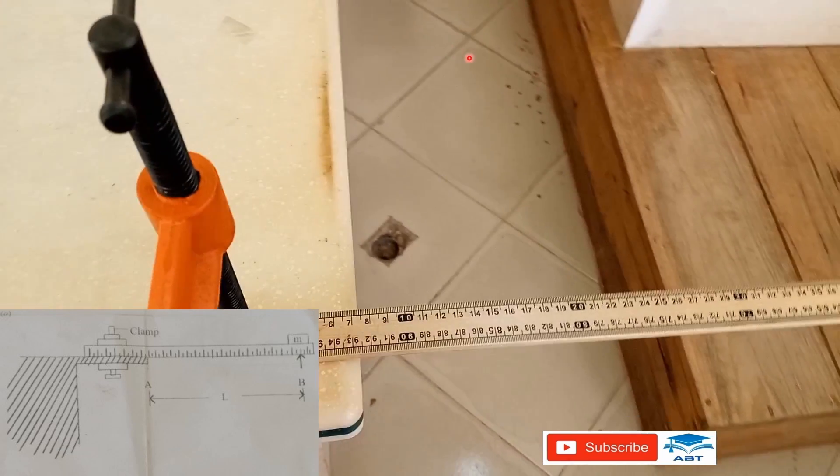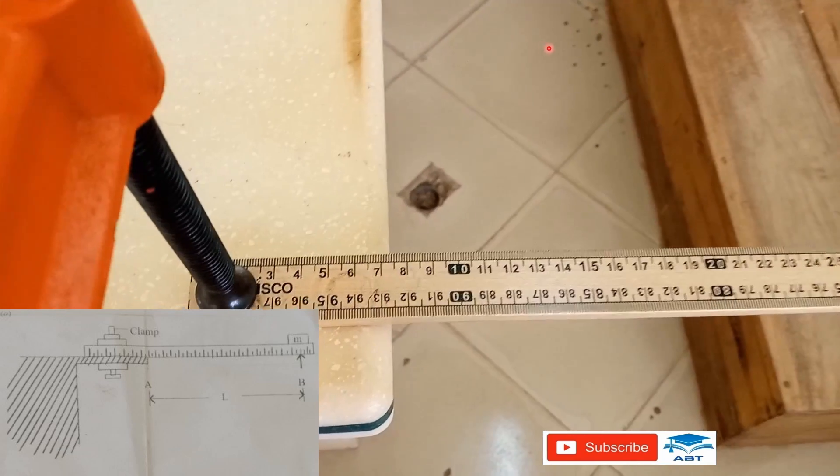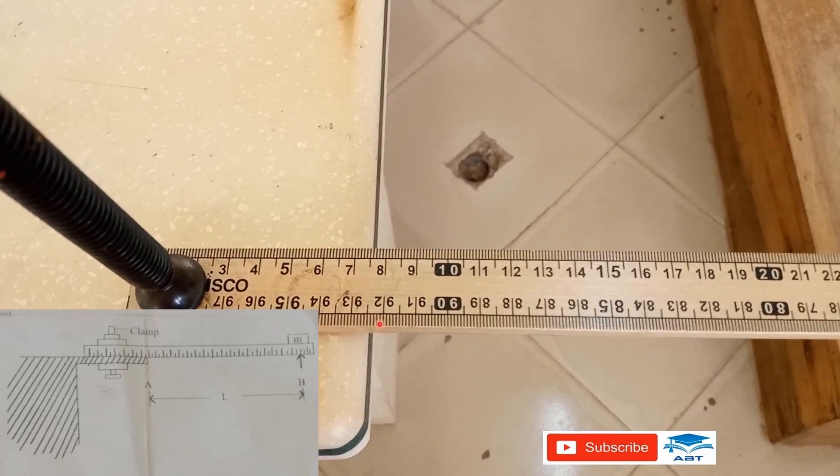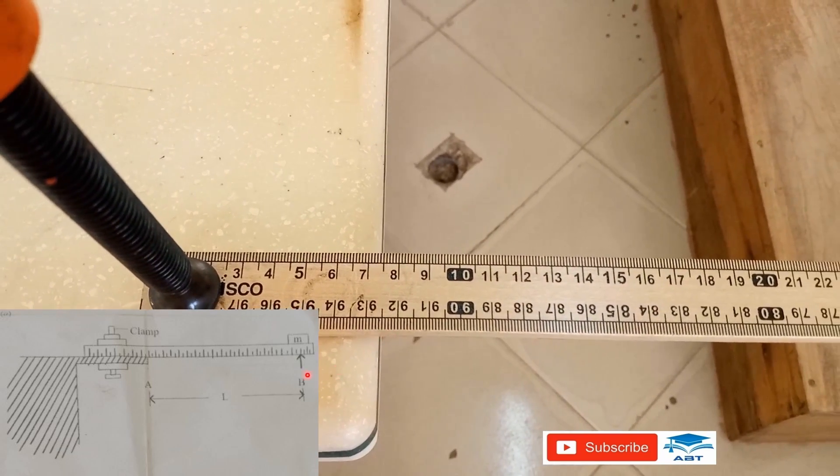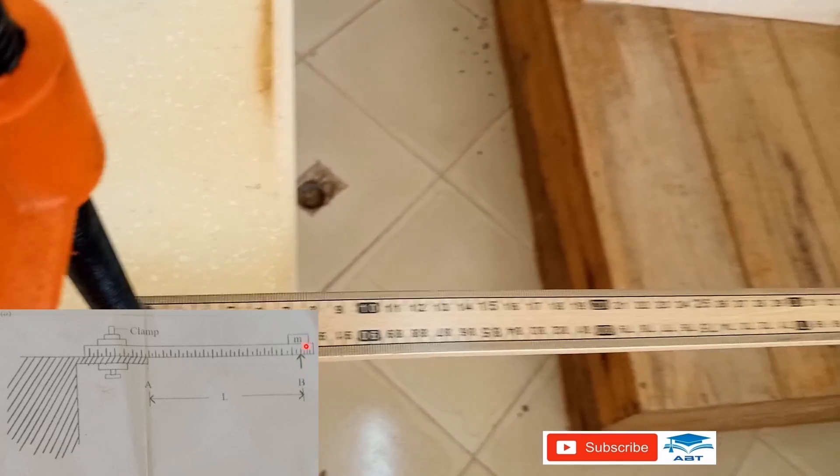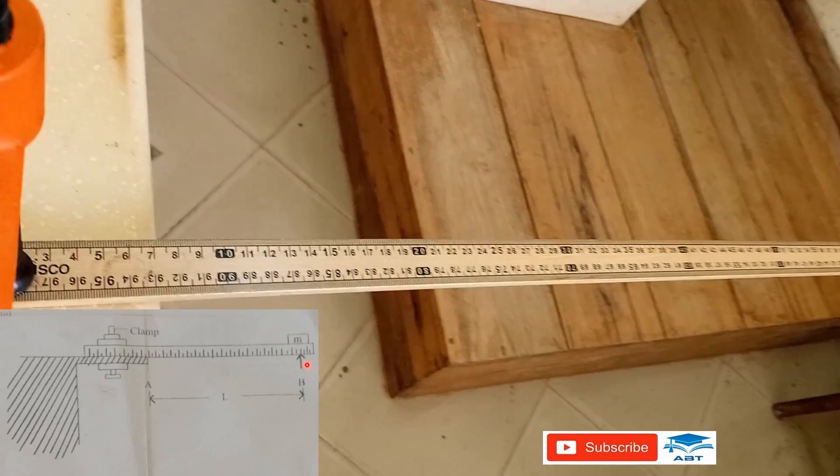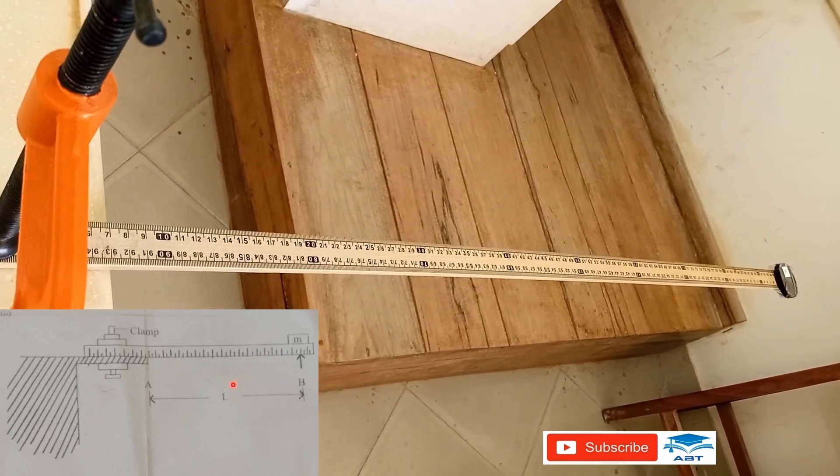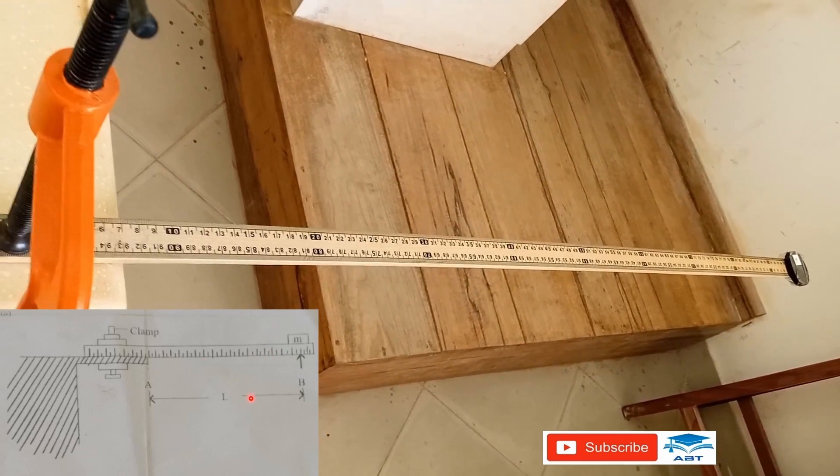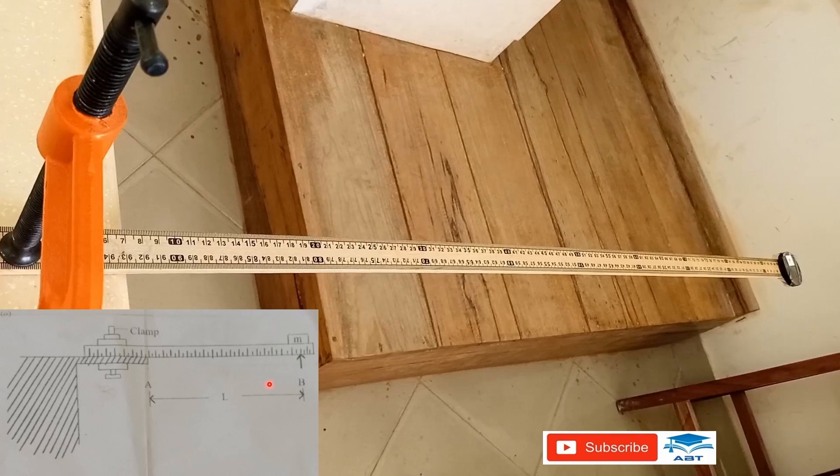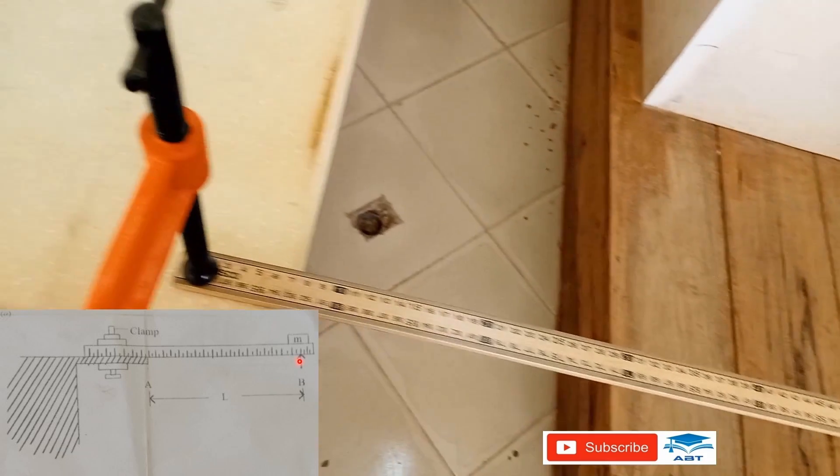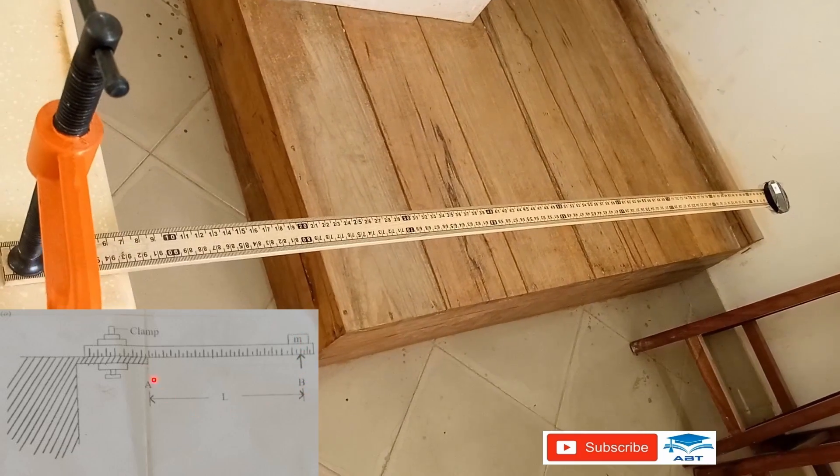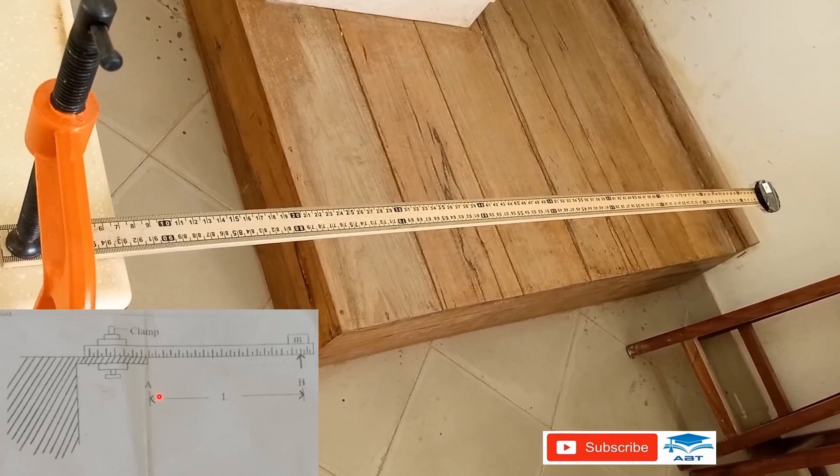Set the distance AB equal to L equals 90 centimeters. So we set this side at 92.5 centimeters because the mass is placed at 2.5 centimeters, so the difference will give us 90. Since the length is measured from the middle of the mass to the edge of the bench.